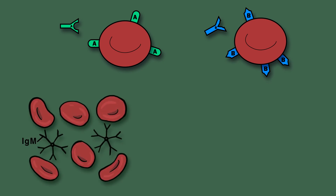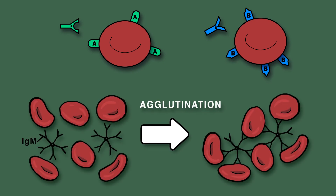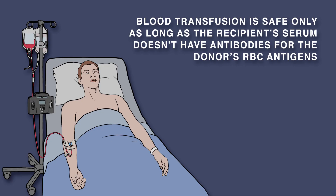If antibody A encounters antigen A, or if antibody B encounters antigen B, an agglutination reaction results. This is very dangerous, and we'll cover this in a follow-up video. Blood transfusion is safe only as long as the recipient's serum doesn't have antibodies for the donor's blood cell antigens.